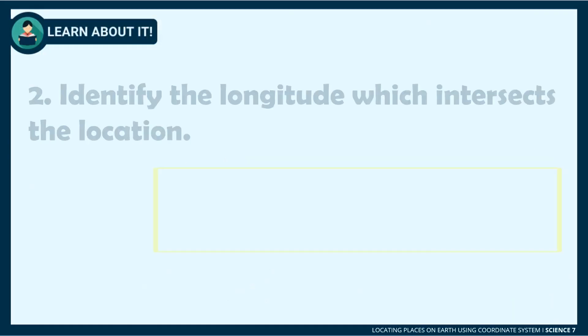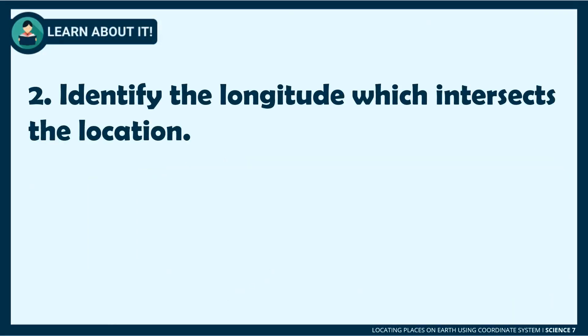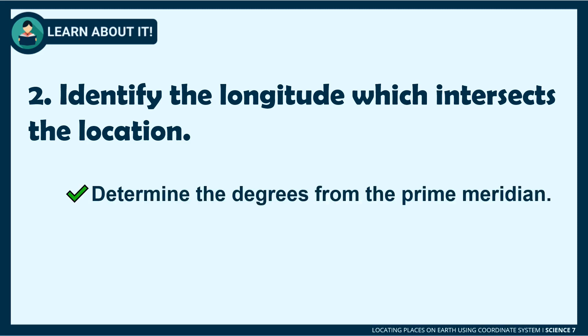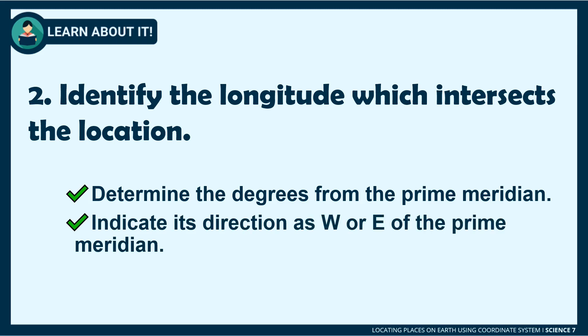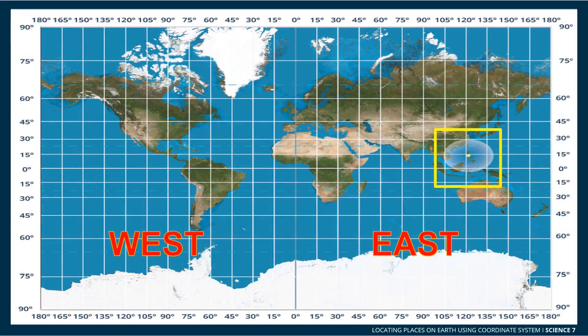Step two: provide the longitude which intersects the location. Instead of the equator, use the Prime Meridian as the reference point and determine the distance from it. After getting the value, note whether the place is found east or west from the Prime Meridian. Manila, Philippines is located at 121 degrees longitude, and the direction is east since it is located to the right side of the Prime Meridian.